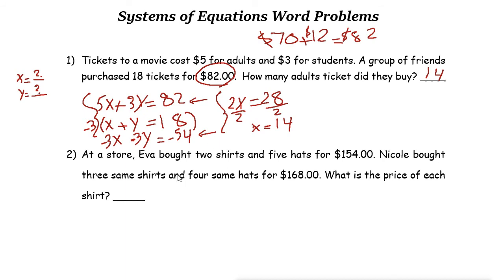Let's take a look at the next one. At a store, Eva bought 2 shirts and 5 hats for $154. Nicole bought 3 same shirts and 4 same hats for $168. What is the price of each shirt? Let's put X as the number of shirts and Y as the number of hats, and we don't know the value of both.